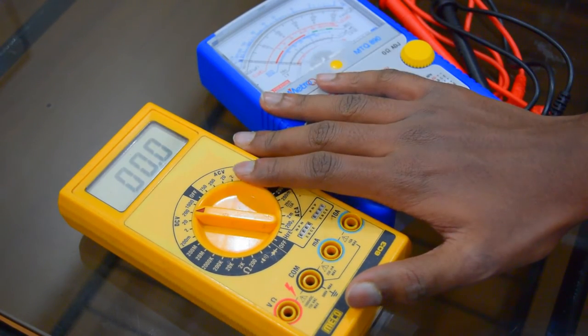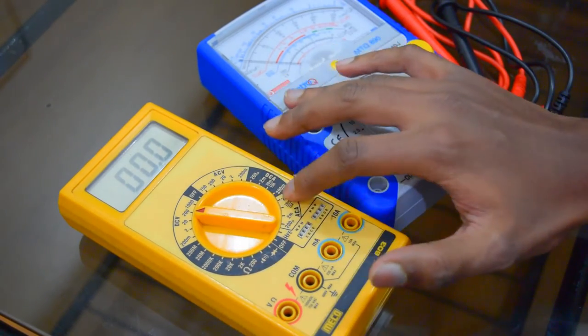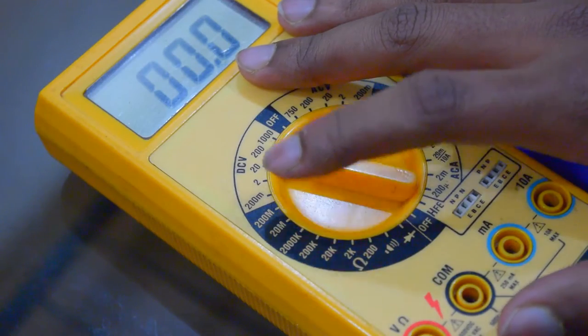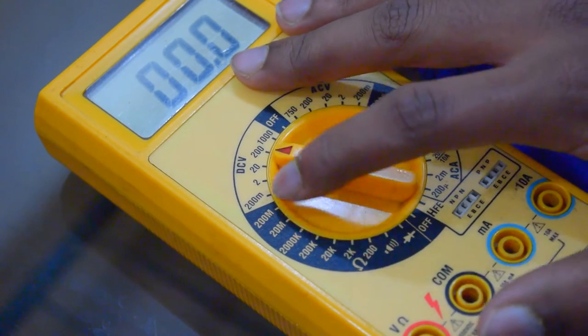Using this multimeter, I'll show you how to measure the voltage, current and the resistance. Now I'll show you how to measure the DC voltage.